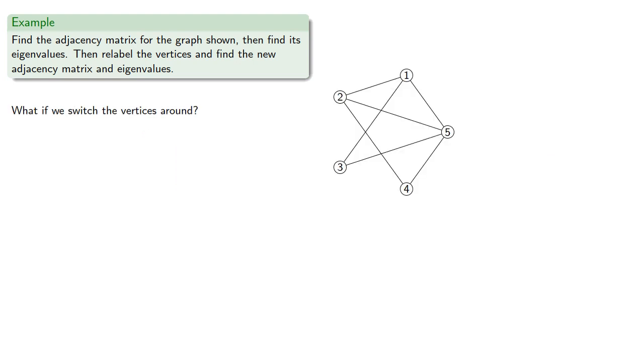What if we switch the vertices around? So let's try relabeling. How about this one? Our new adjacency matrix is...